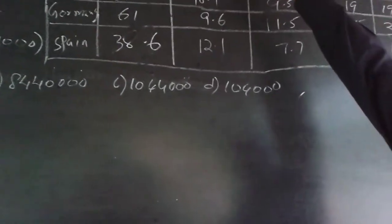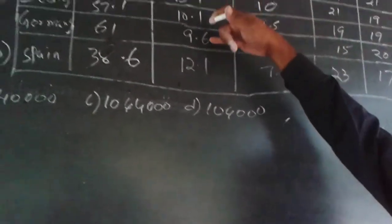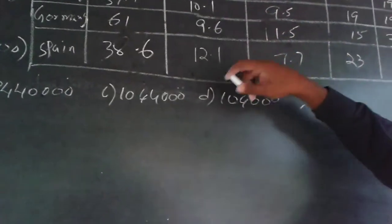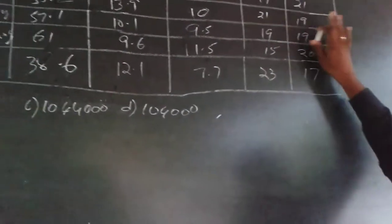Here I just said million, it is 13.3 per thousand, 13.9 per thousand, 10.1 per thousand, 9.6 per thousand, 12.1 per thousand. And then percentage of population under 15 is given, 60 or above is given. I am not going into detail because we are not concerned here.